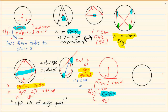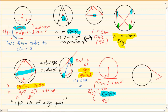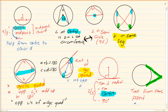The next theorem is tangents from the same point. If you have two tangents from the same point, then the length from the point where they start to where each tangent touches the circle — those lengths are equal. This is the second theorem linked with tangents.